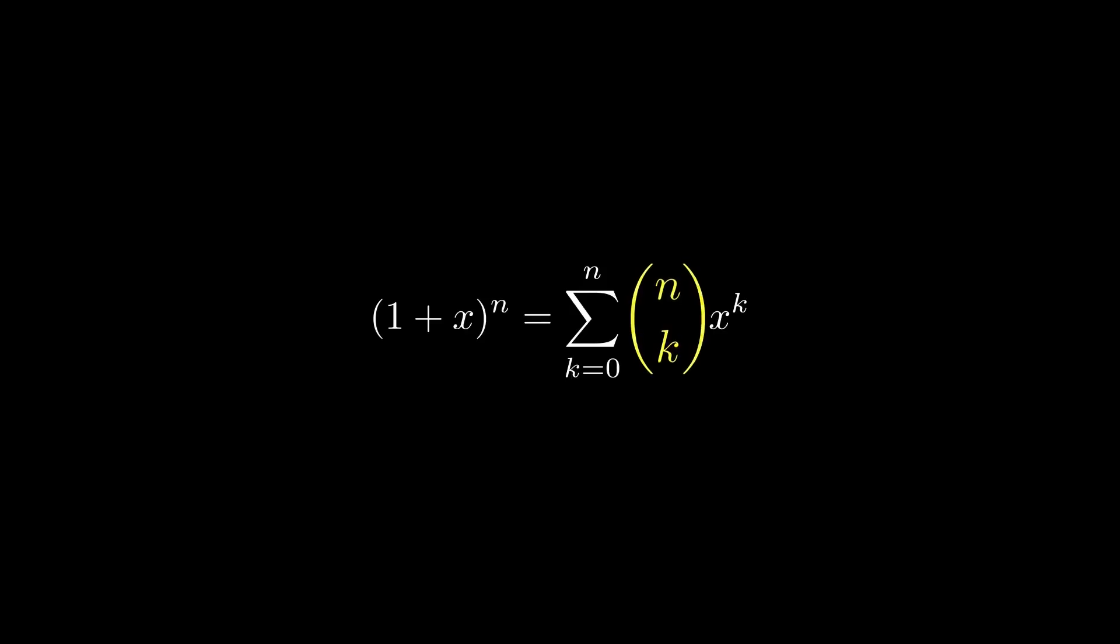But basically in the formula, this n choose k term means the number of ways of choosing k objects from a set of size n. It's also equal to the coefficient on x^k when you expand (1+x)^n. You can see that by choosing k x's from these n factors.